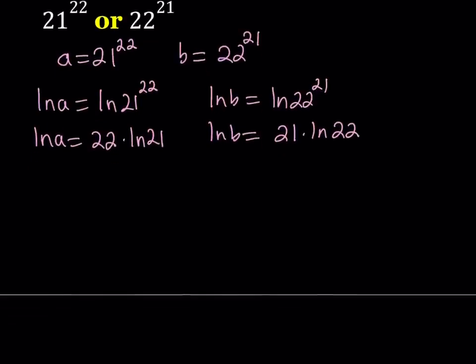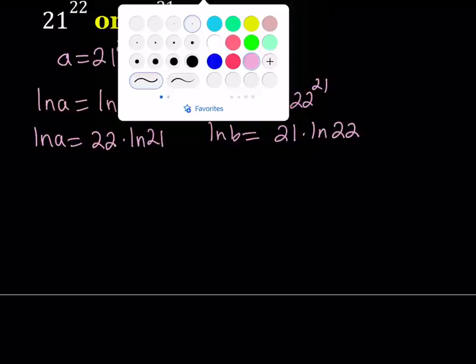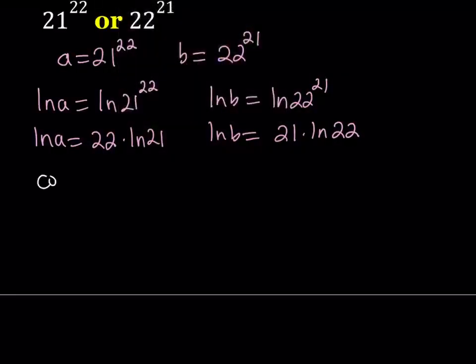So instead of comparing A and B, I'm going to be comparing ln A and ln B. Since these two quantities are not equal, one of them has to be greater than the other. So we're going to consider the following function next. Our function is going to be y equals ln x over x.